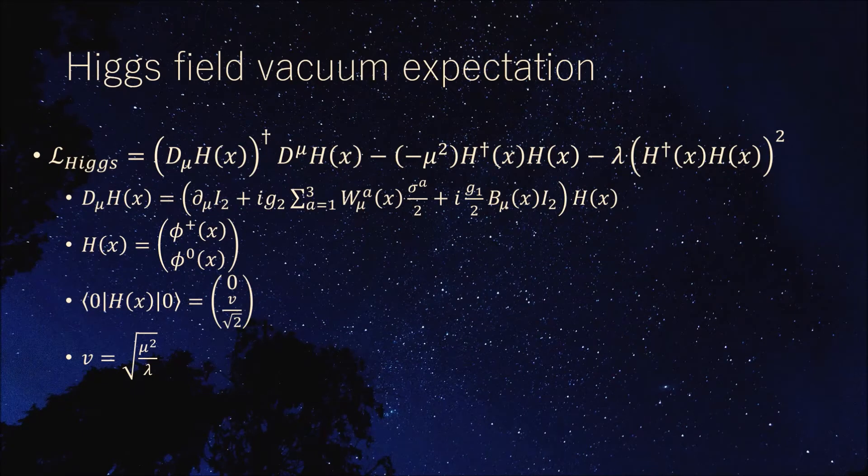The standard model is SU3 cross SU2 cross U1Y gauge theory. Since SU3 gauge symmetry is not relevant to future discussions, we will focus on SU2 cross U1Y gauge symmetry and discuss the Higgs field vacuum expectation value.